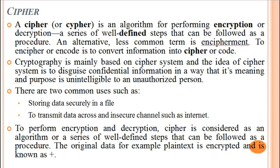What is cipher? A cipher is an algorithm for performing encryption and decryption, or we can say a series of well-defined steps that can be followed as a procedure. An alternative, less common term is encipherment. To encrypt, encipher, or encode is to convert information into a cipher or code. Cryptography is mainly based on cipher systems, and the idea of a cipher system is to disguise confidential information in a way that its meaning and purpose is unintelligible to an unauthorized person.